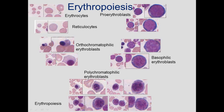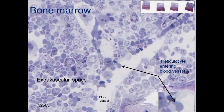Looking at these stages again: the mature one is the erythrocyte. A reticulocyte is the immature one passed off. The orthochromatic has a nucleus that ultimately is removed. The polychromatic has blue and pink, with a less dense nucleus. The nucleus is spherical in the basophilic erythroblast. The pro-erythroblast has very blue cytoplasm.